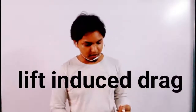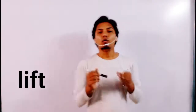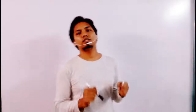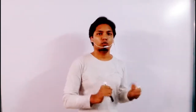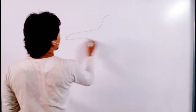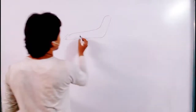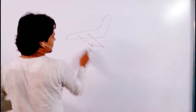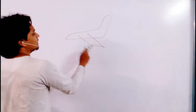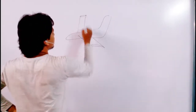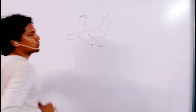So our point is: why are wingtip vortices being generated? Let's see this. This is an airplane and this is a wing. This side wing is called the port wing and this side wing is called the starboard wing.